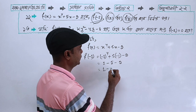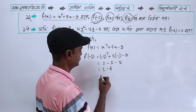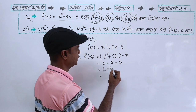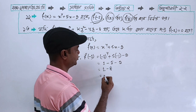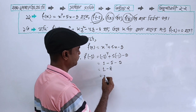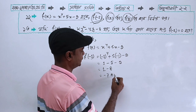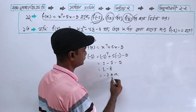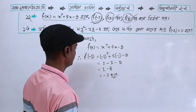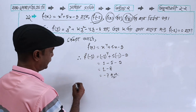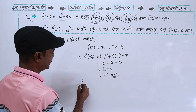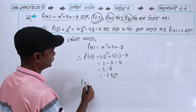So minus 8 plus 1 is minus 7. The answer is the function of 2 is evaluated next.